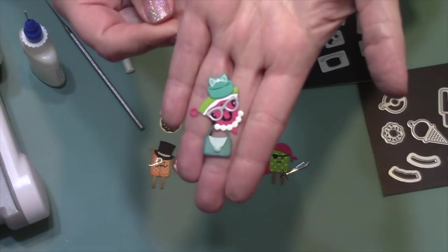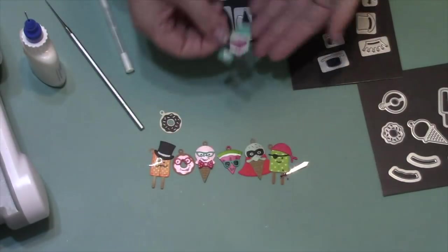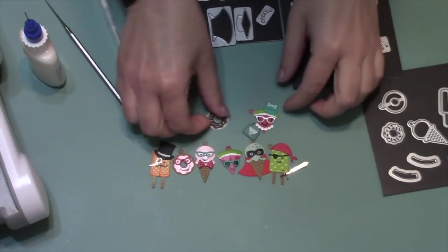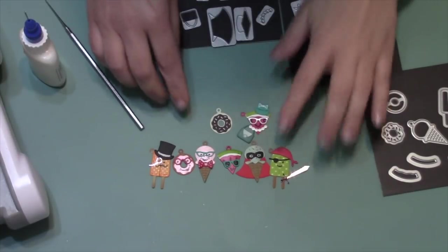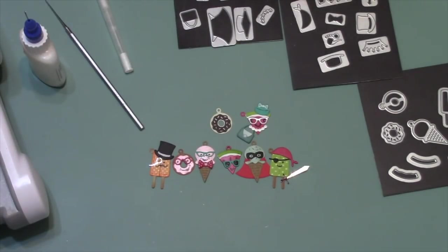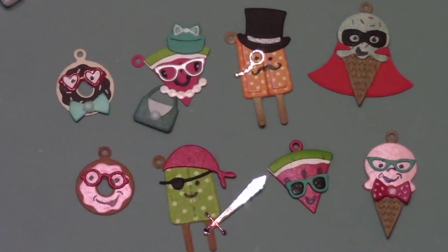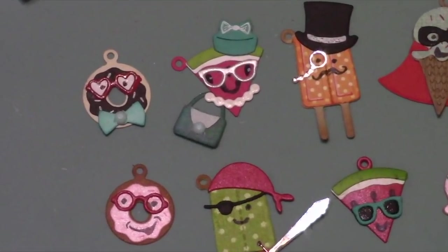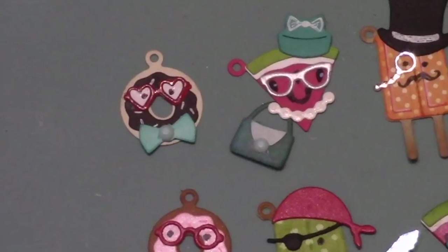Then I just glued all those pieces to the watermelon and finished her out with a nice pair of spectacles. I just used the seeds that I had already put on the watermelon as the eyes and then just connected a couple of them with a line to make the mouth. On my final donut charm, the heart-shaped glasses from 2 and the bow tie from 1.